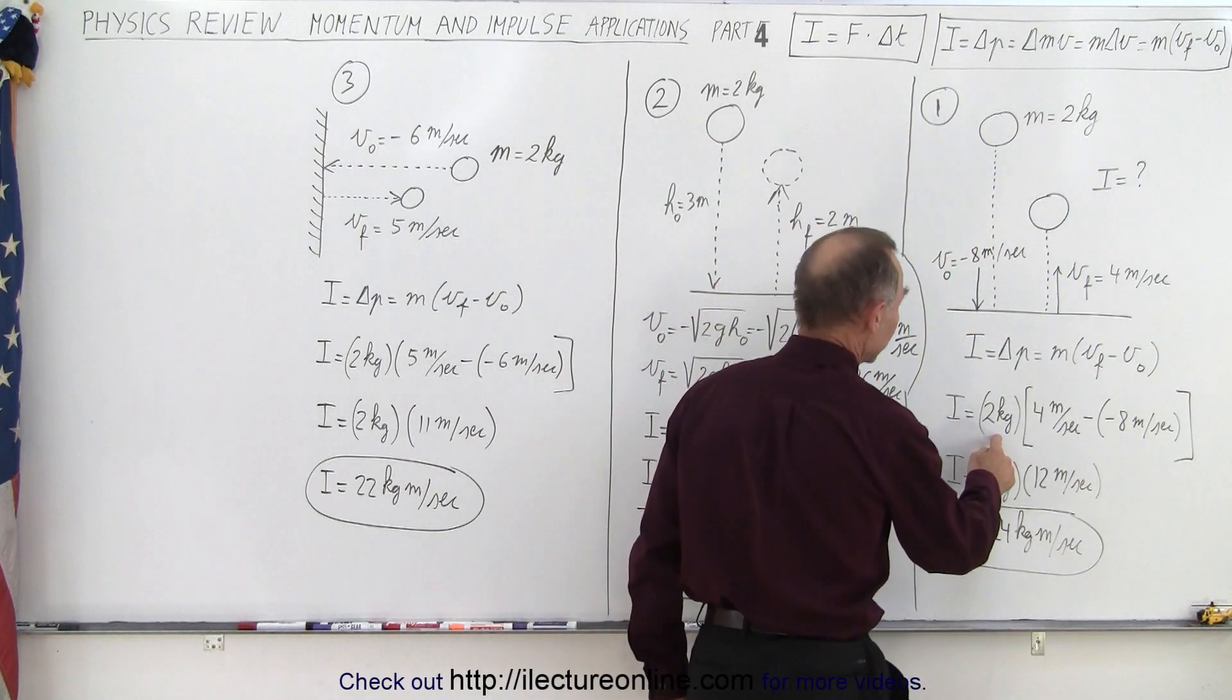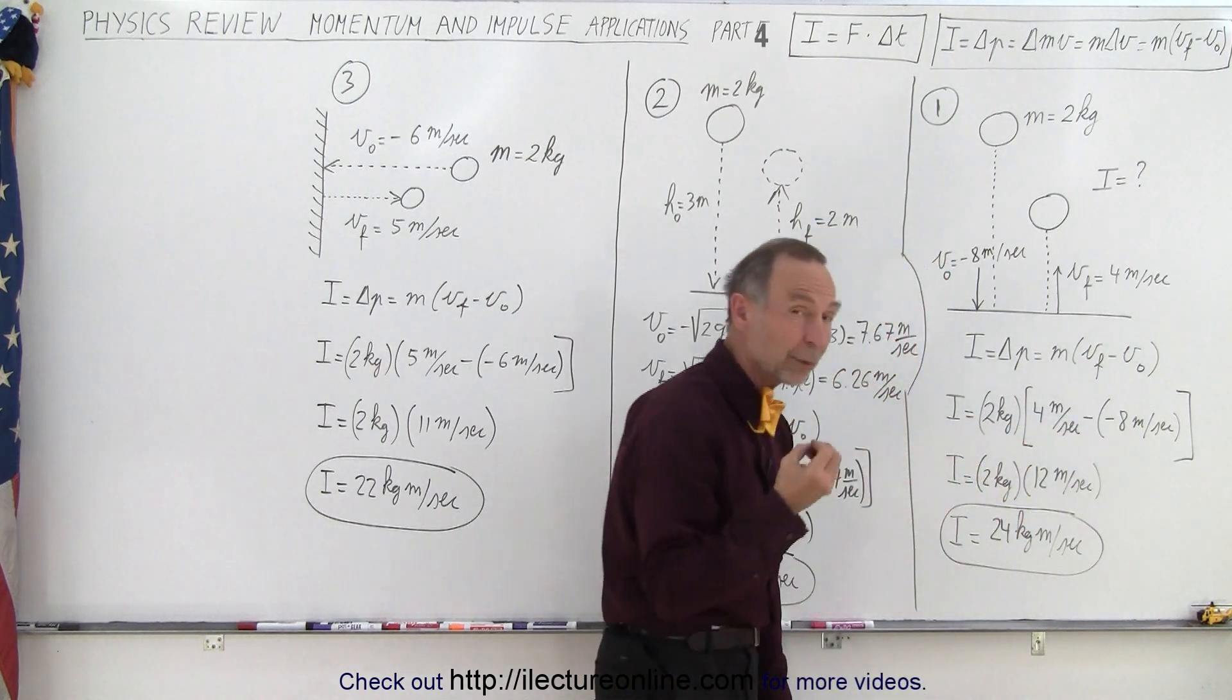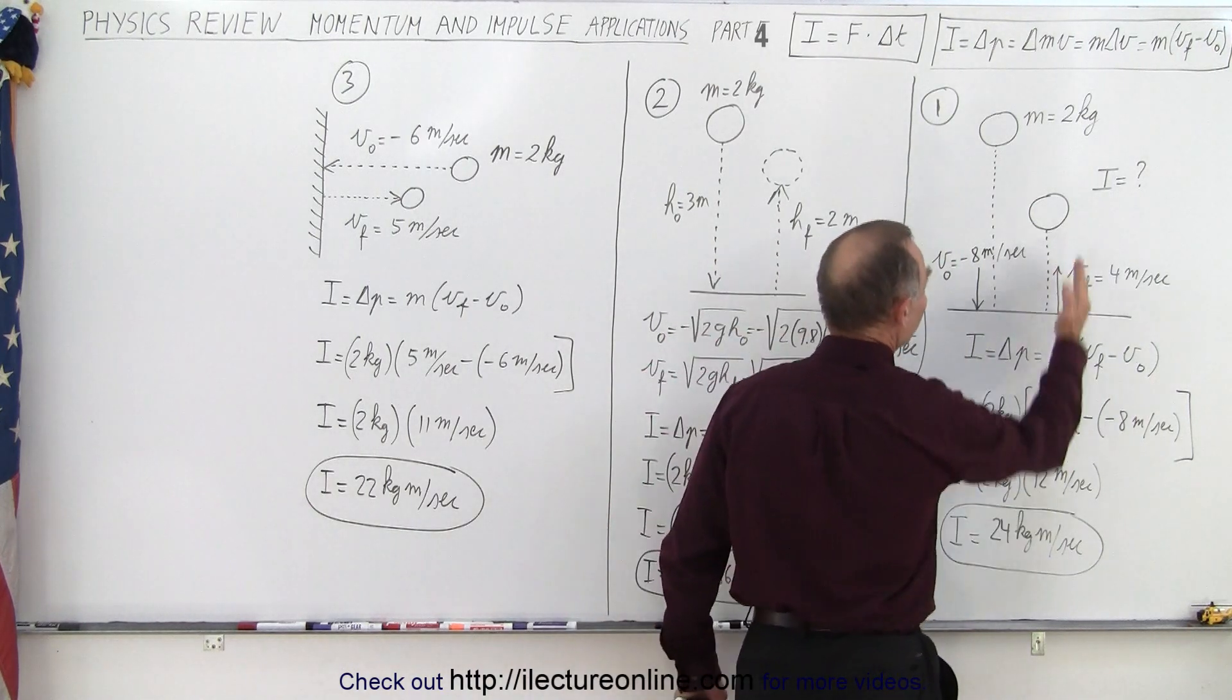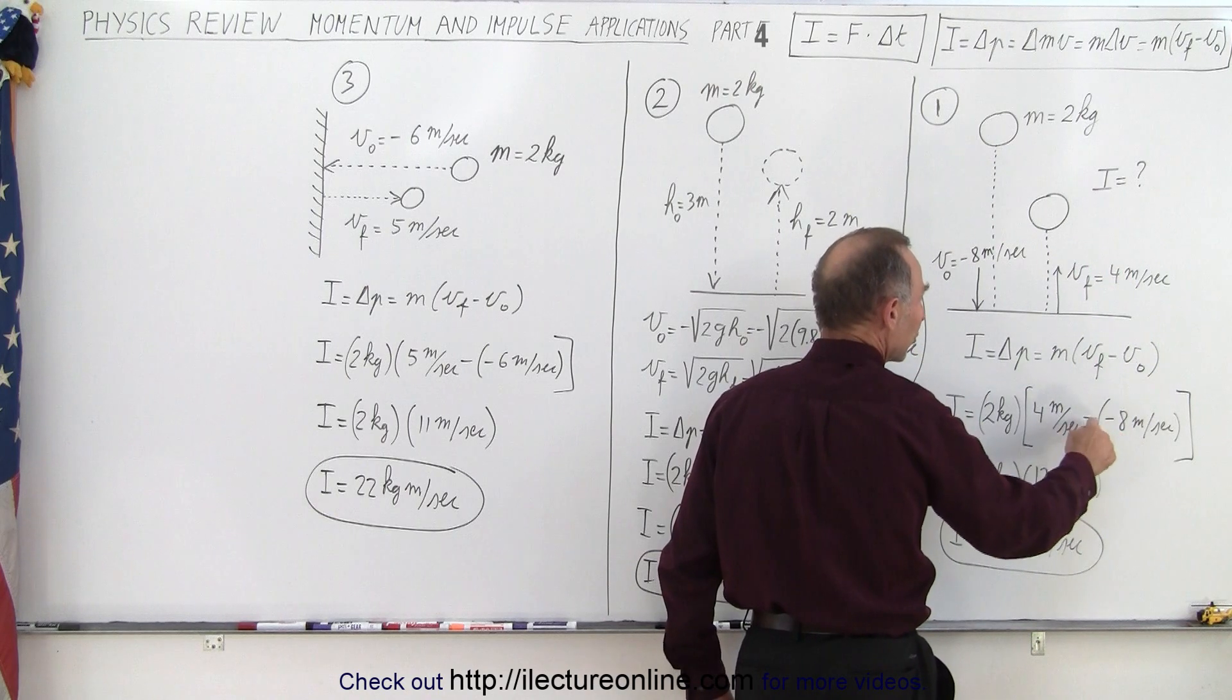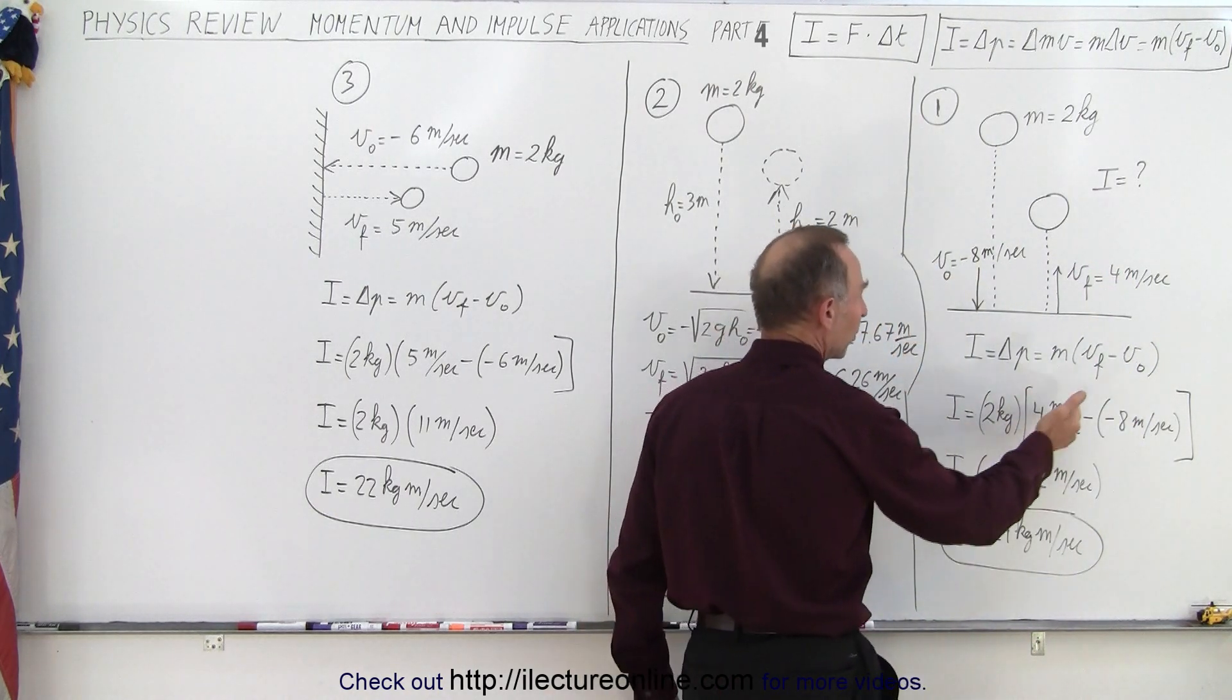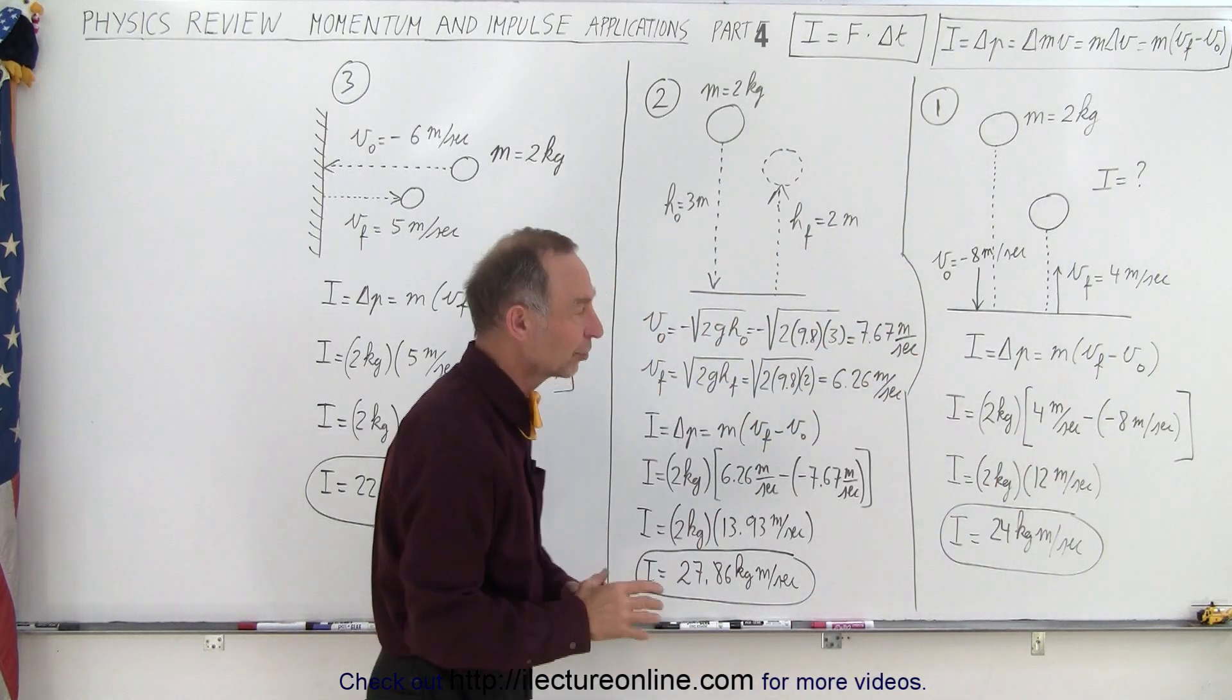So we take the mass of two kilograms and the final velocity minus the initial velocity, and we do have to account for the sign for the direction. So the final velocity is upward so it's positive. The initial velocity is downward so it's negative, but we're subtracting the initial velocity. So essentially it'd be four plus eight or twelve times two, or 24 kilograms meter per second for the impulse.